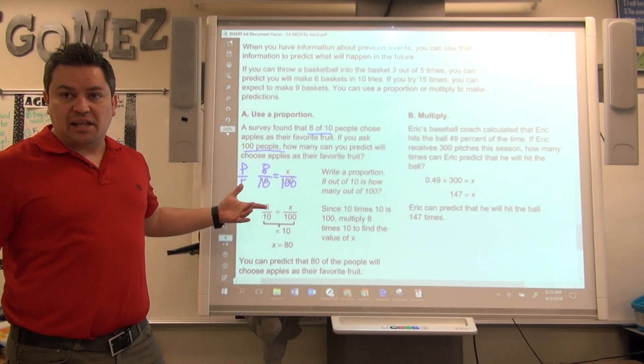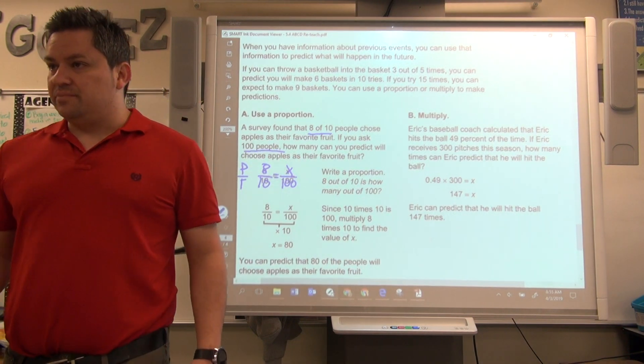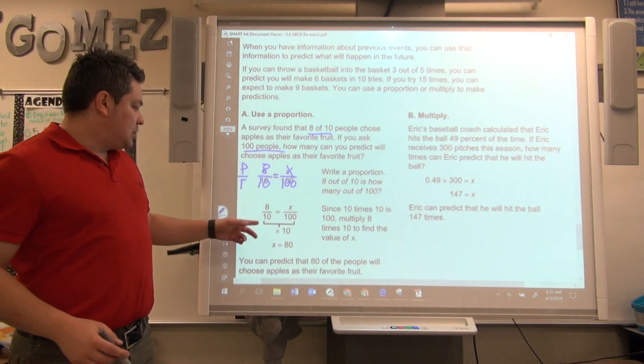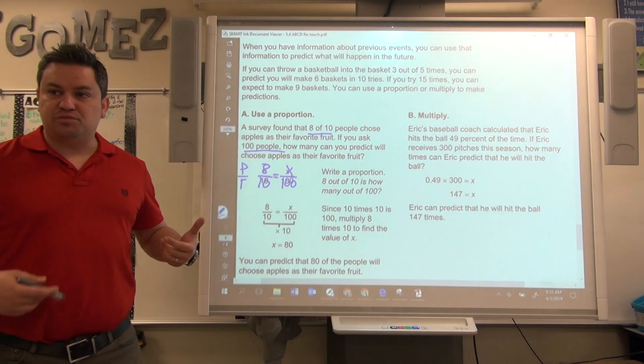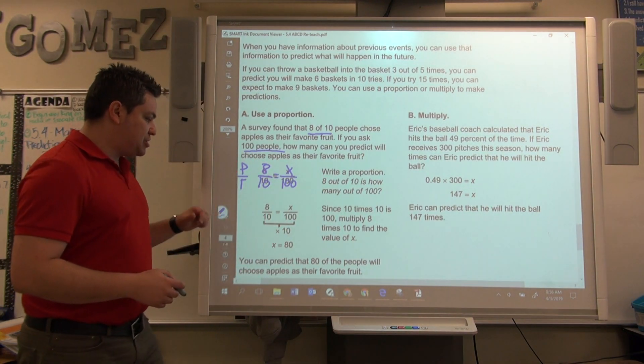The hundred people goes on the bottom because that's the total number of people that you're going to be asking later on. And x goes right here to find out your prediction. Now, you simply do cross products, butterflies, whatever you want to call it. So, you will set your equation.